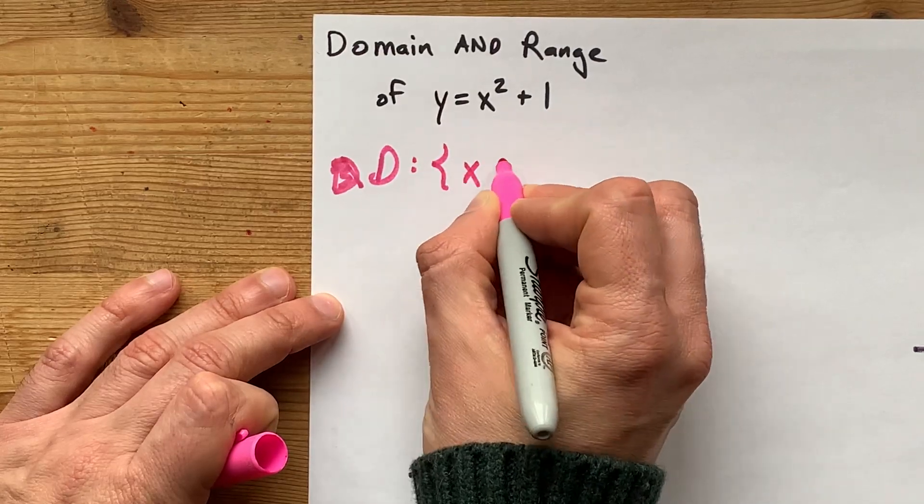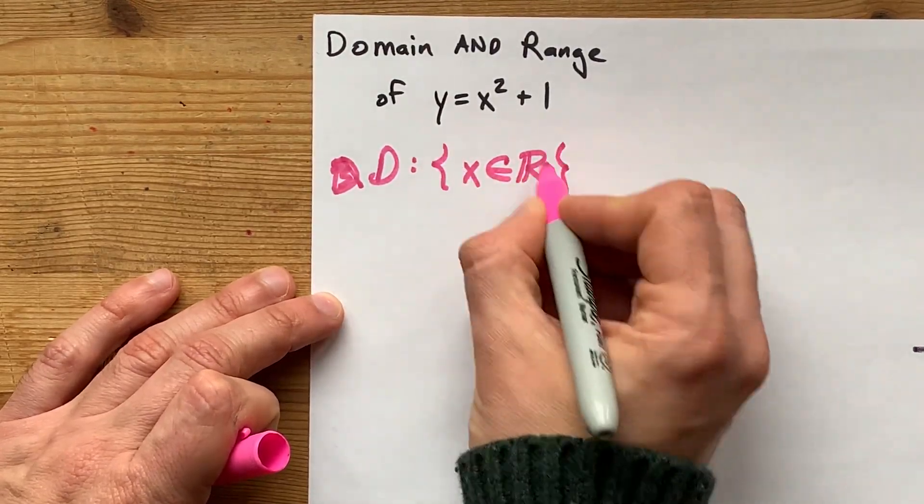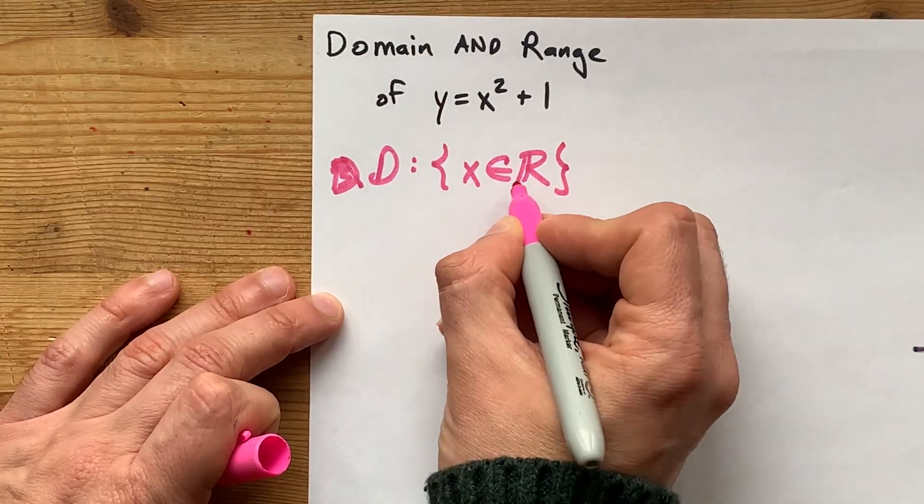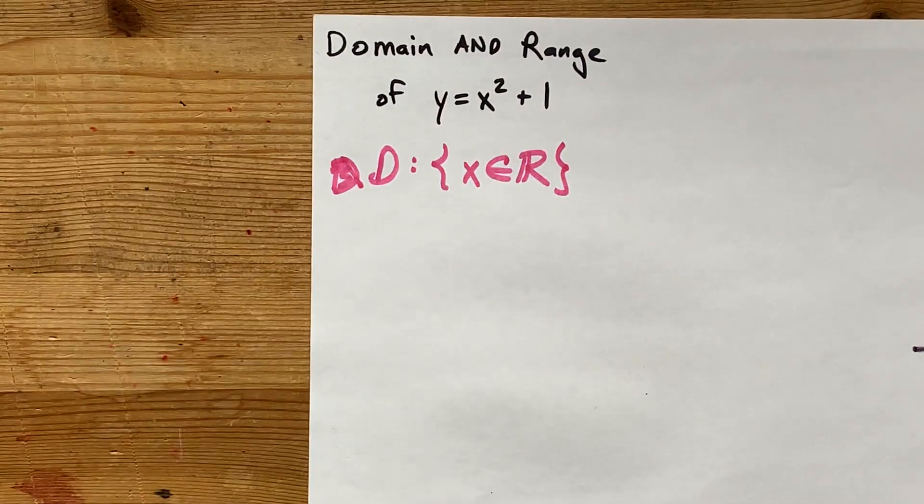So the domain is x can be any real number. We write, in curly brackets, x is an element of the real numbers. Teachers like to see this double-barred R for real numbers.